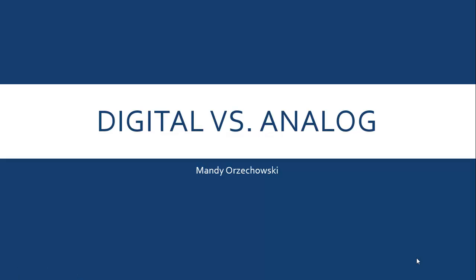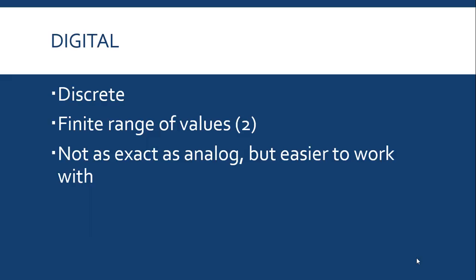So let's talk a little bit about digital versus analog signals. Digital is a form of discrete, and digital only has two values, a finite range of values. Digital values are specifically a zero and a one. Digital is not as exact as analog, but it's easier to work with.